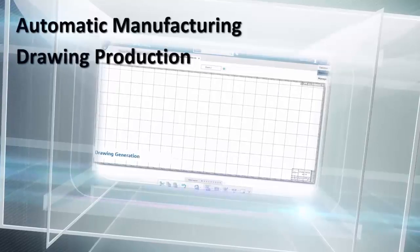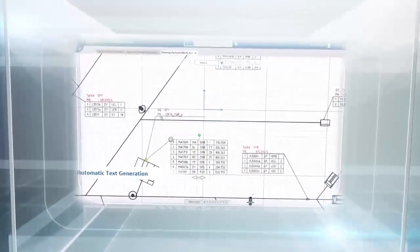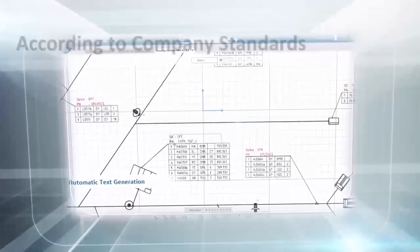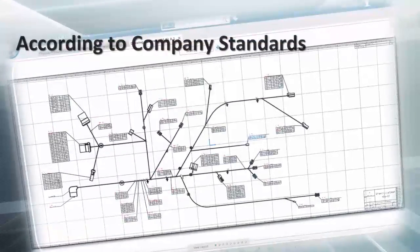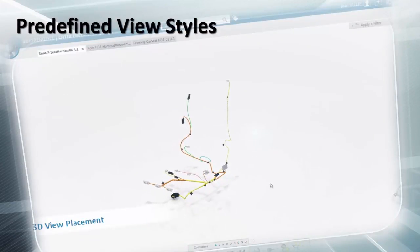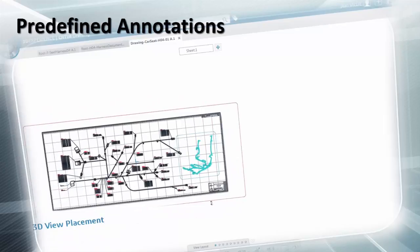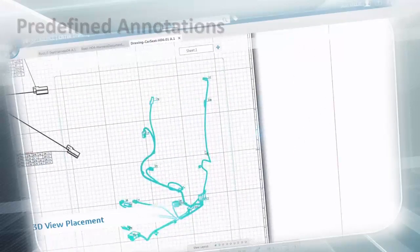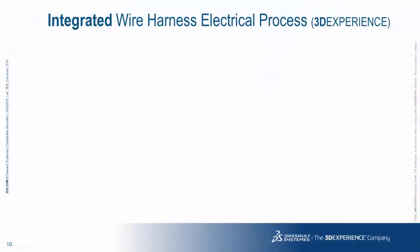Key capabilities in CATIA electrical manufacturing preparation include automatic manufacturing drawing production. Border, title block, and revision table are defined according to company standards and reused. There are predefined view styles, predefined annotations by object type, and the ability to include additional views — for example, perspective views of the harness.